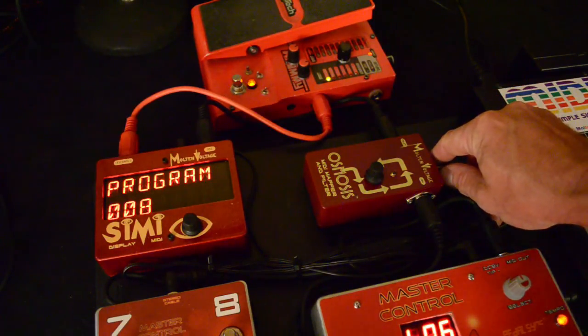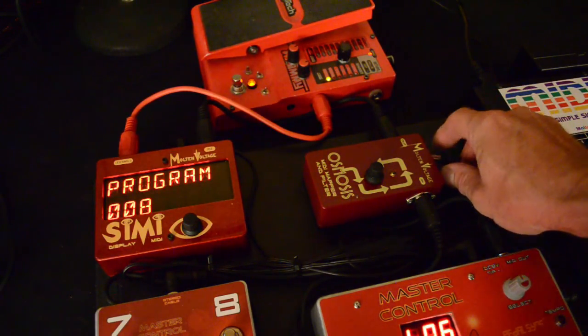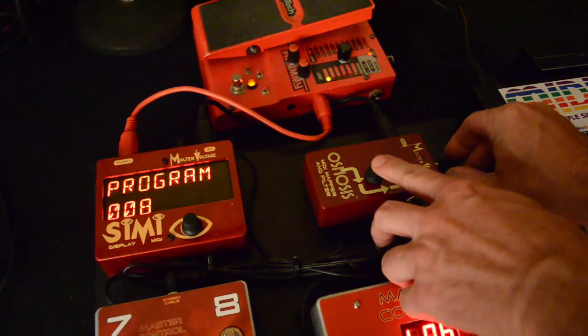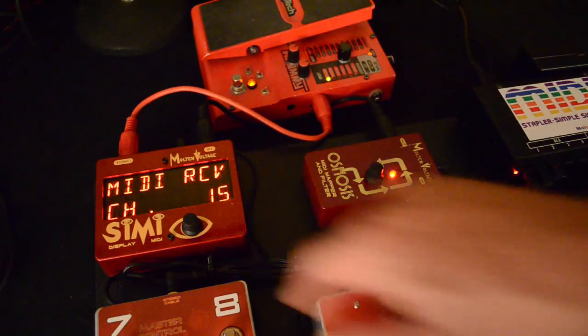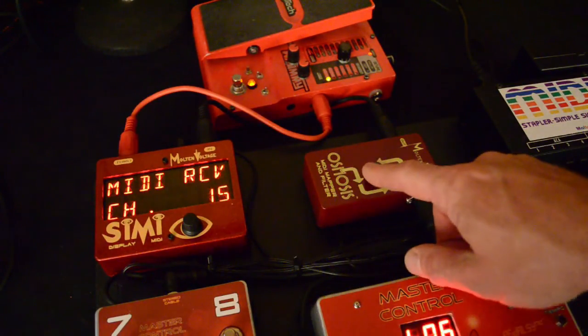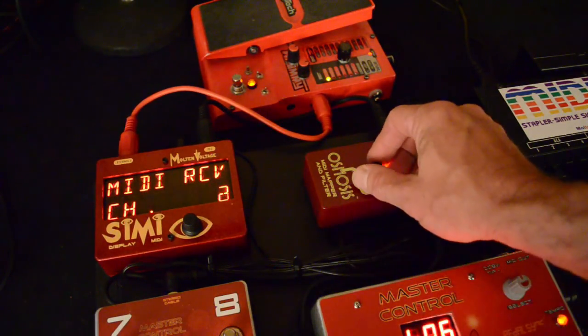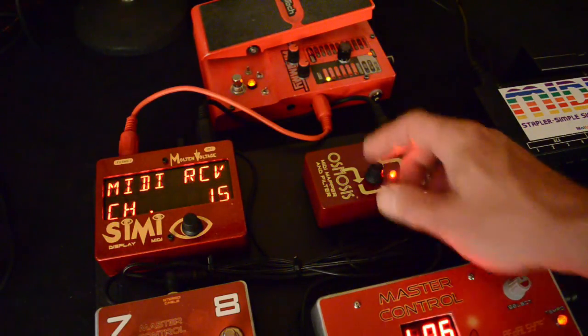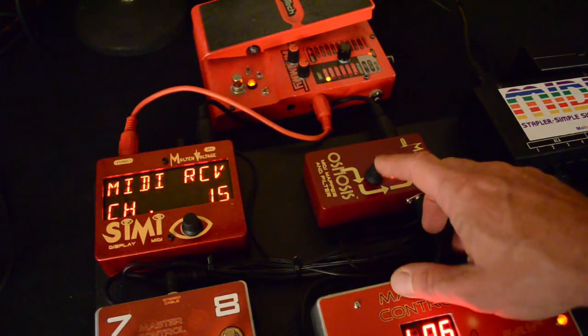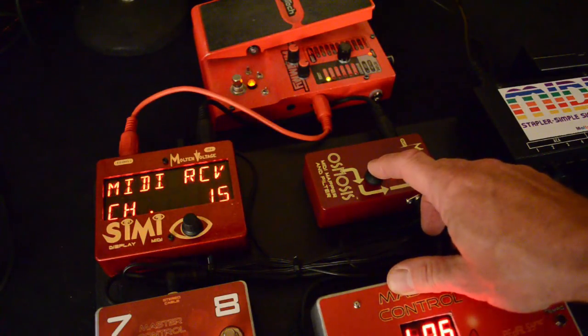So the first thing we'll do is go through the Globals menu. To get there, you hold down the button on Osmosis while you power it on. Then you'll see it said Edit Globals, and now we're in the Globals menu. First thing is the MIDI receive channel. You can set it to Omni, or my stuff's set to MIDI channel 15, so that's what I'm going to have it on. Then press the button to advance.